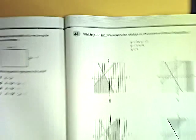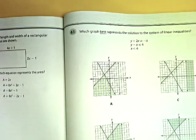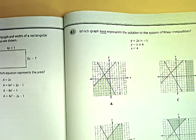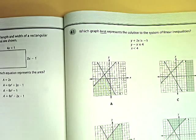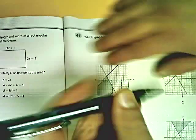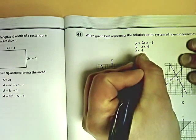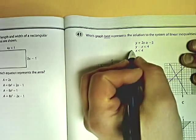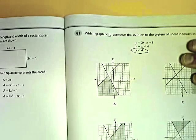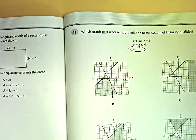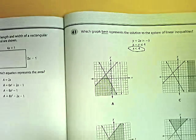You have y plus 2x is greater than or equal to negative 3. y minus x is less than or equal to 4. And x is less than 4. Uh-oh. This says x is less than 4. Remember, if there's no y, you can't graph it in the calculator, so you're going to have to think in your head. What does this look like?